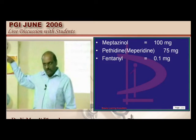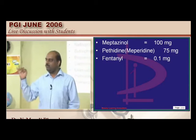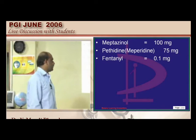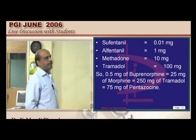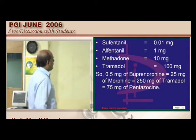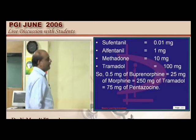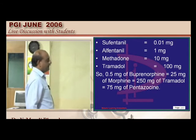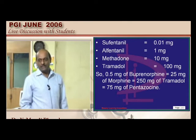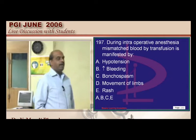For steroid potency: the relationship is 1:4:10 for hydrocortisone, prednisolone, and dexamethasone. For opioids, what the examiner asked: 0.5 mg of buprenorphine equals 25 mg of morphine, which equals 250 mg of tramadol, which equals 75 mg of pentazocine — these equivalences need to be remembered.